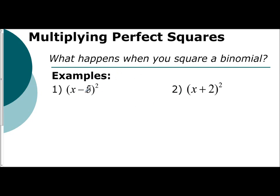We know to square something means to multiply by itself. So we're going to write down x minus 5 times x minus 5. Then we're going to distribute. x to x is x squared, x to negative 5 is negative 5x, negative 5 to x is negative 5x, and negative 5 to negative 5 is positive 25.